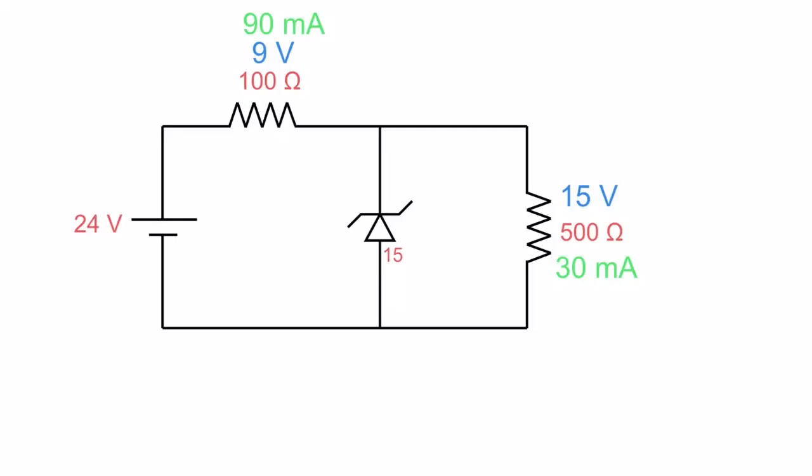And the only thing left to figure out now is what my Zener current is. Well if up here I have 90 milliamps and there's a node here, I have 30 milliamps coming to this node and suddenly it becomes 90. That means that across this Zener I must have 60 milliamps flowing.